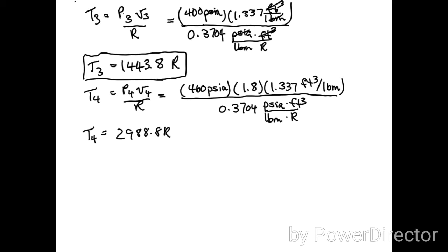State four is solved in a similar manner using the ideal gas law, giving a temperature T4 = 2988.8 R. The key here is knowing the volume at state four: v4 is equal to 1.8 multiplied by v3, from the given cutoff ratio.